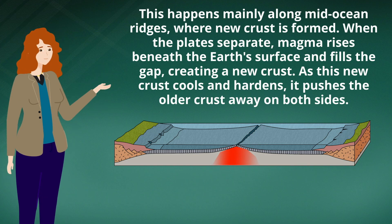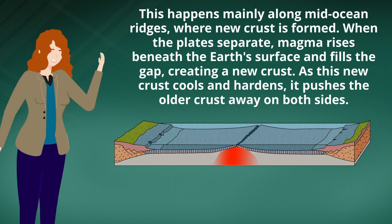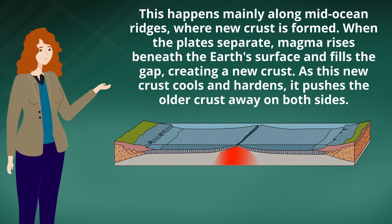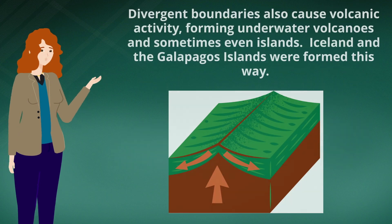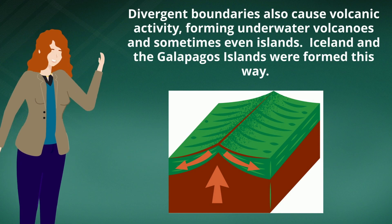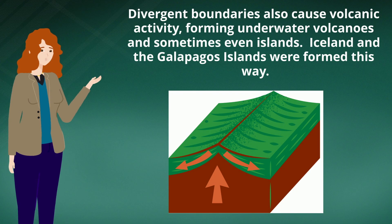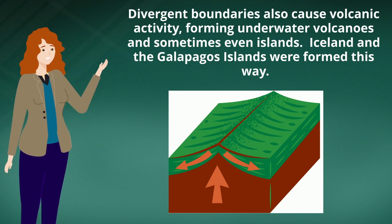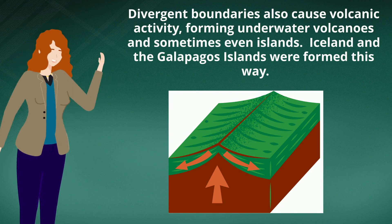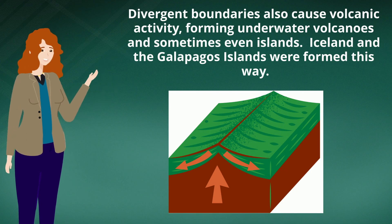As this new crust cools and hardens, it pushes the older crust away on both sides. Divergent boundaries also cause volcanic activity, forming underwater volcanoes and sometimes even islands. Iceland and the Galapagos Islands were formed this way.